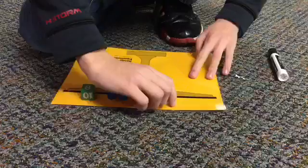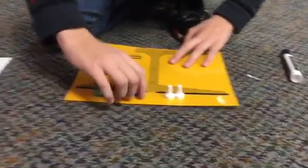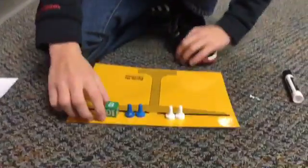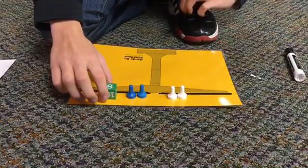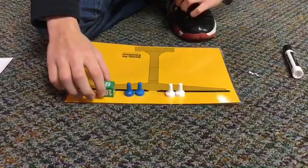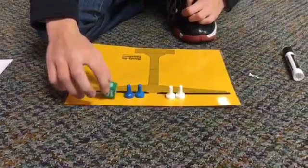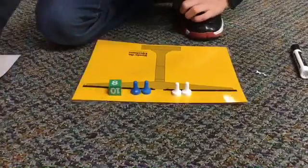So, next we have the opposite of 2x equals 2x plus negative 8. Now, what we want to do is we're going to add two white pawns to each side.